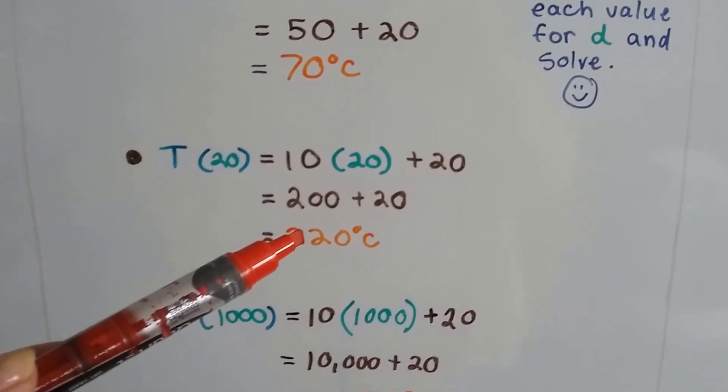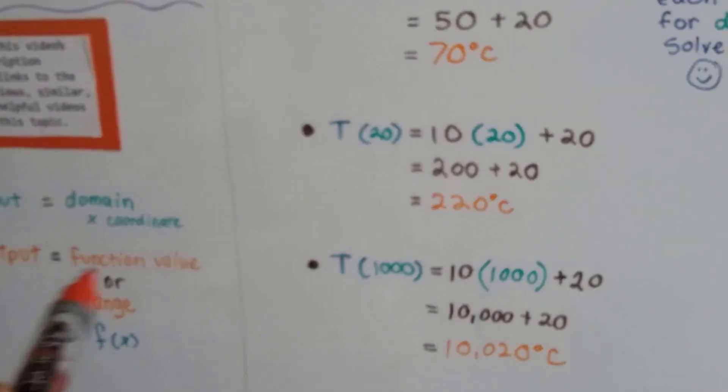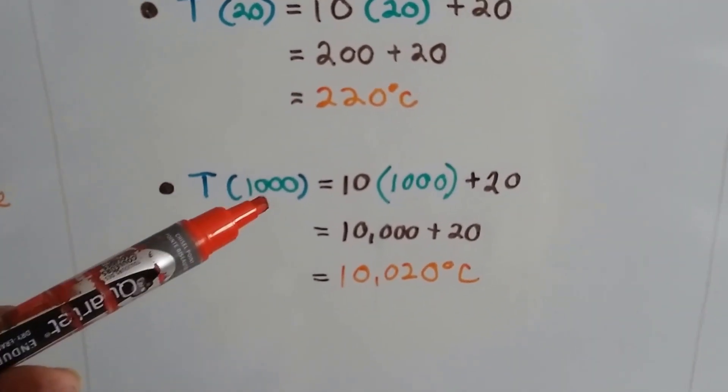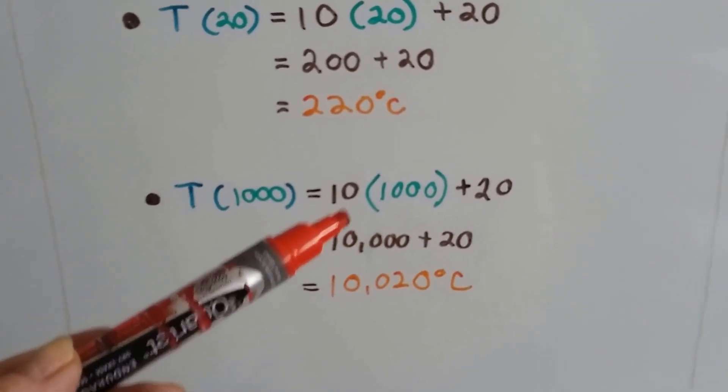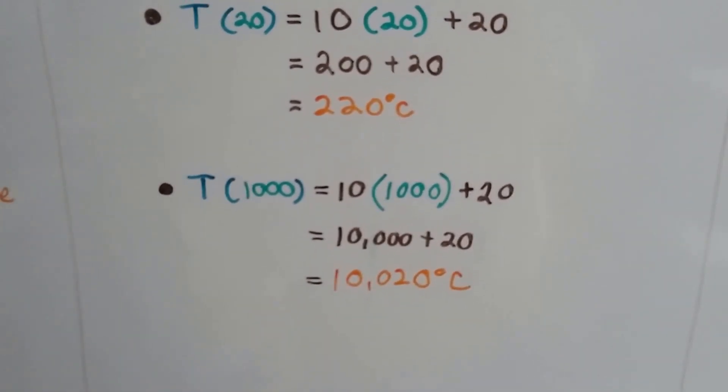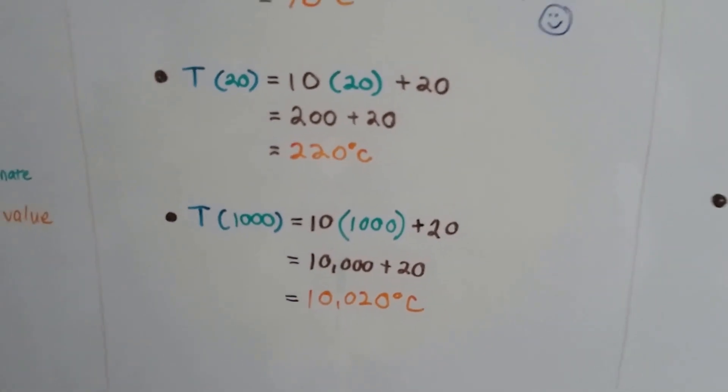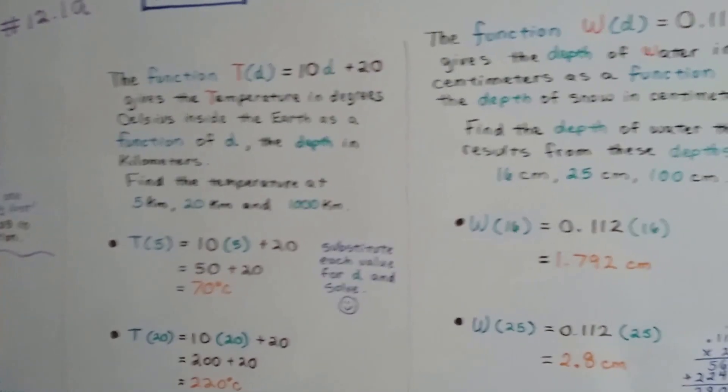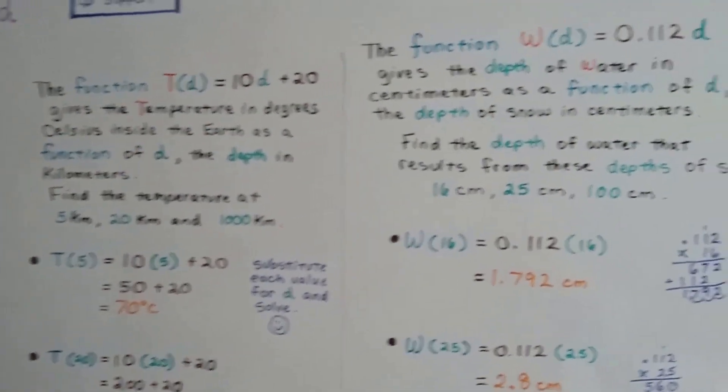That's the function value. The orange ones are the function value or the range. For 1,000, we plug the 1,000 in. 10 times 1,000 is 10,000 plus 20 is 10,020 degrees Celsius. Isn't that easy? Don't let the letters of the alphabet scare you. You can see where they're coming from in the word problem.